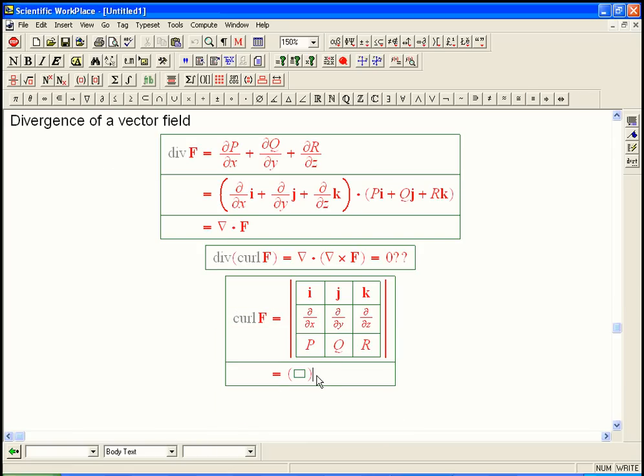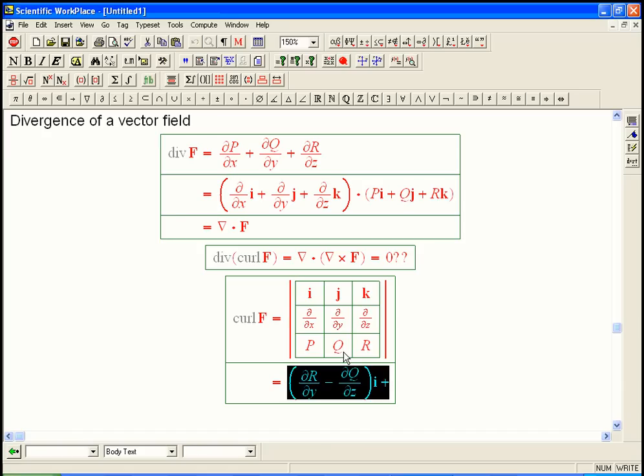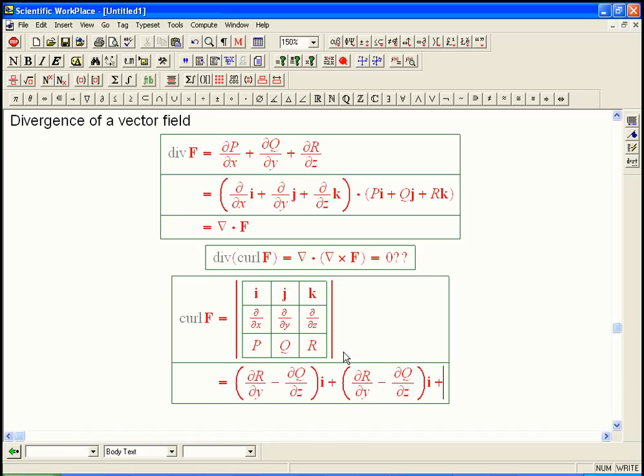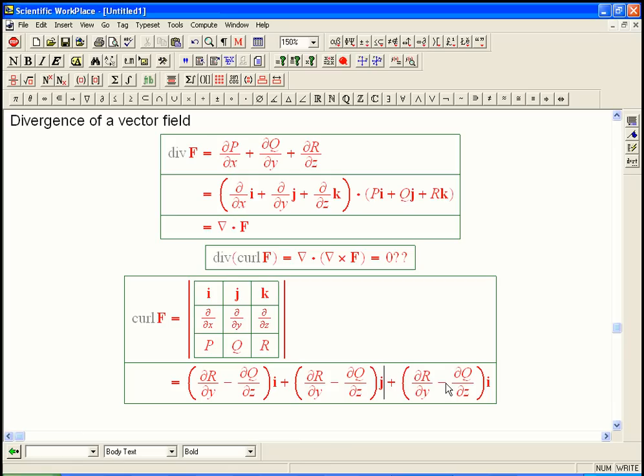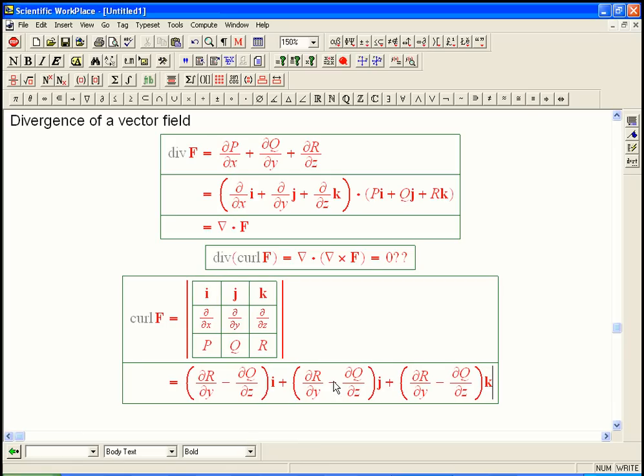We're going to get some stuff times i. So this is going to be d/dy of R, or sorry, i is going to be d/dy of R. So d/dy of R minus d/dz of Q. And now I'm just going to copy that and change the letters. So this is going to be j. This is going to be k. And there's the secret minus sign here in front of the j. And then d/dx of R and d/dz of P.